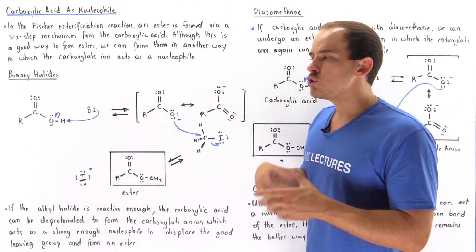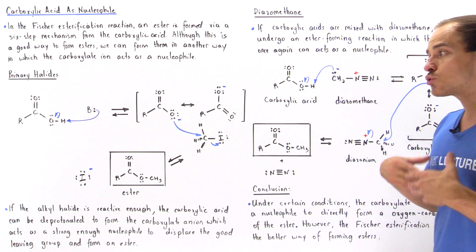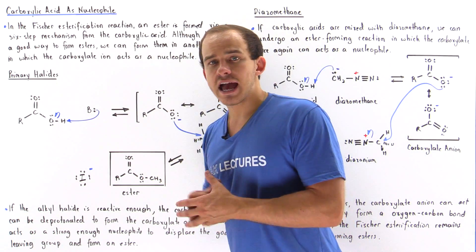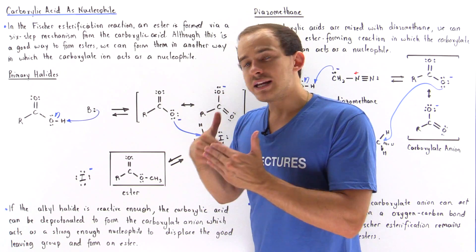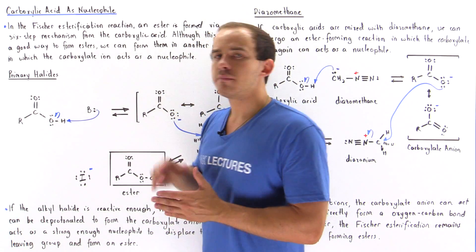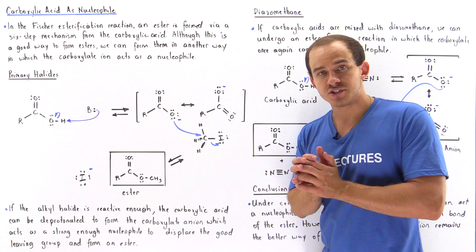Now we're going to discuss two other methods by which we can transform carboxylic acids into esters, and these mechanisms do not involve the breaking of the carbon-oxygen bond.